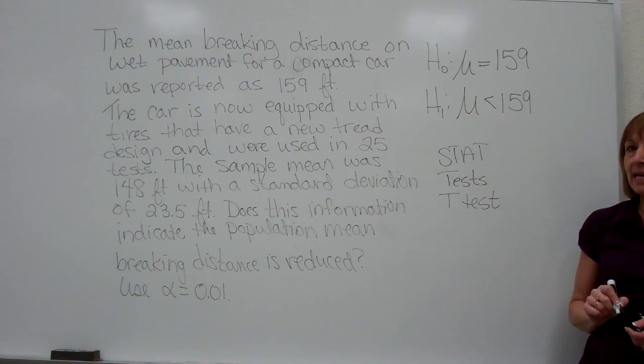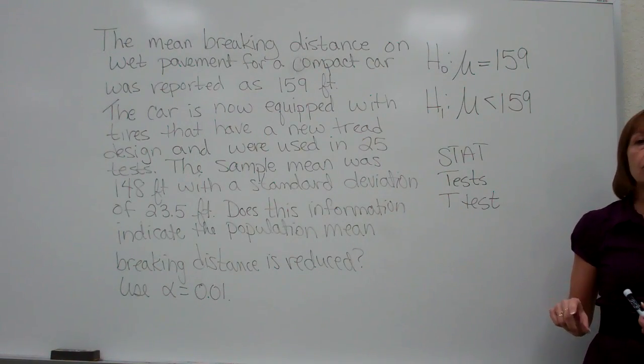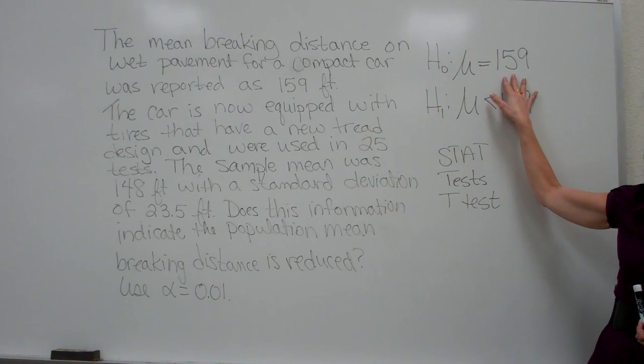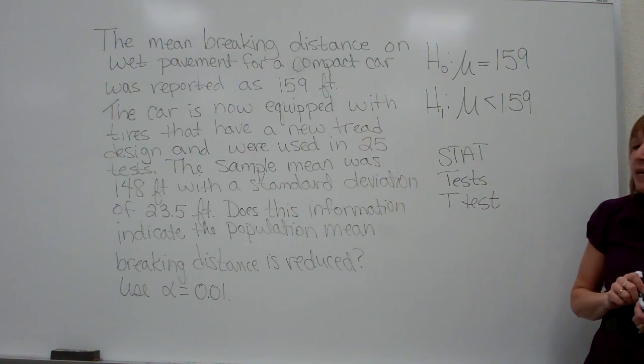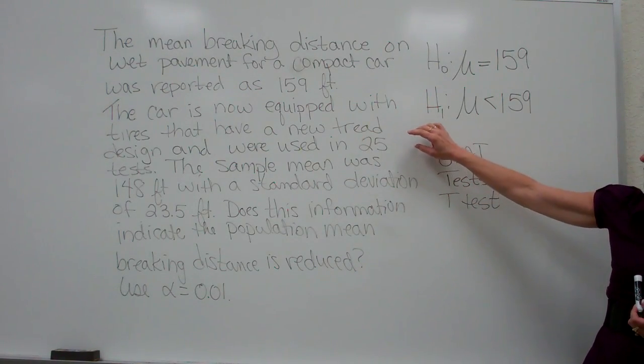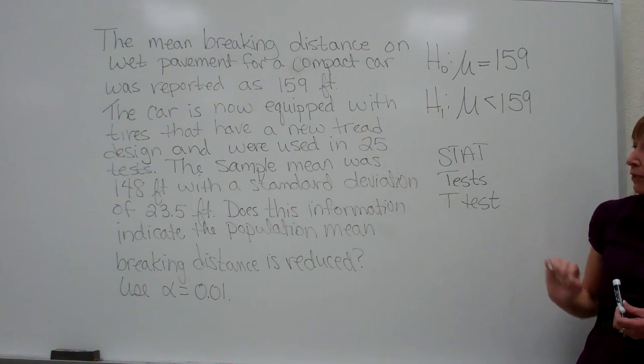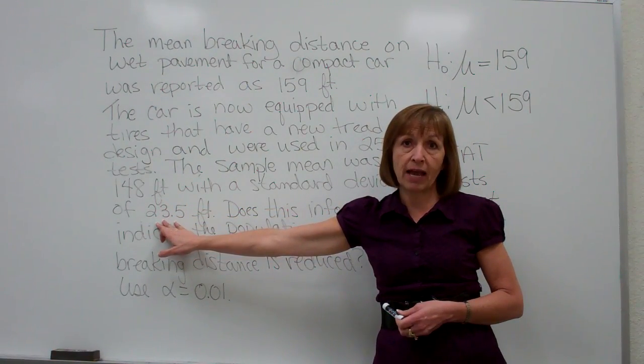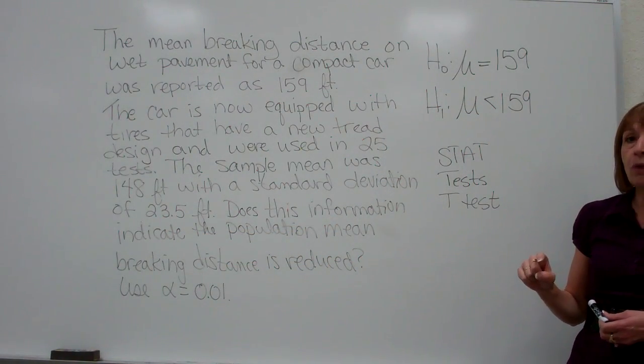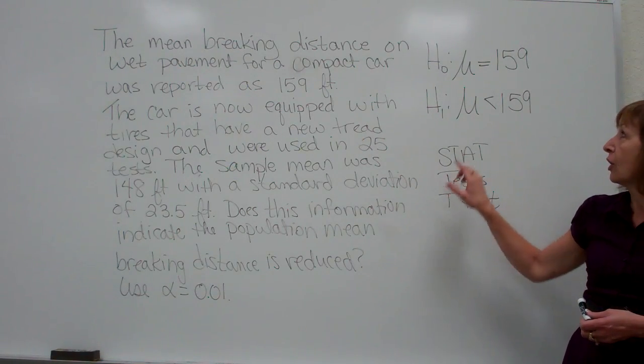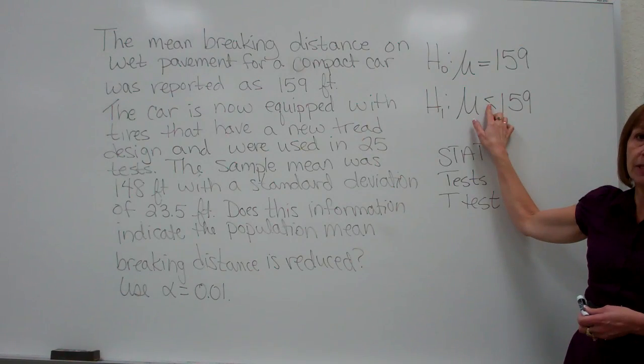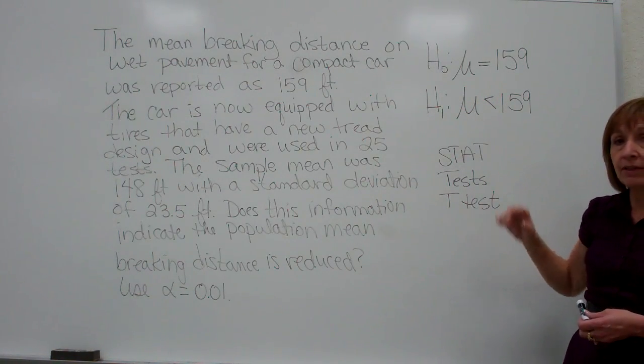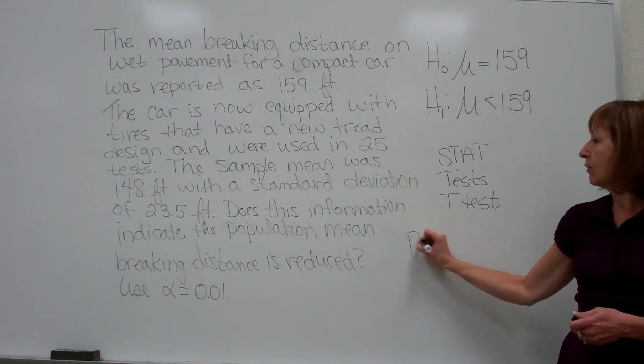Now when you look at the T-test options within your graphing calculator, it's going to want you to put in what it has in terms of the null hypothesis. So you're going to enter the 159 across from the H0 or mu0. Then it also wants you to enter your sample size N, so across from the N you'll put in your 25. You're going to enter in the 148 for your X-bar and the 23.5 across from your S. And then when it looks at whether you want less than, greater than, or not equal to, you pick the one that is the way you have written out your inequality in your alternate hypothesis. So you'll highlight the one that gives you is less than, highlight, and then go down and calculate. Once you calculate that, it'll give you the p-value.